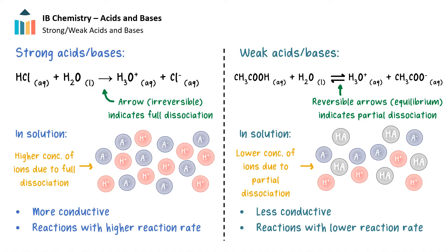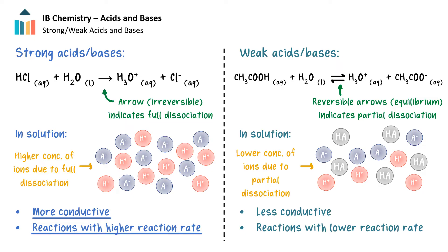What other comparisons can we make between a strong acid or base and a weak acid or base? If we compare a strong and a weak acid of equal concentration, the strong acid will have a lower pH, will be more electrically conductive due to more ions in solution, and will undergo acidic reactions at a higher rate than weak acids. This is because there would be more hydronium ions in solution due to the full dissociation of strong acids. The same can be said when comparing strong bases to weak bases, but with hydroxide ions in solution instead.